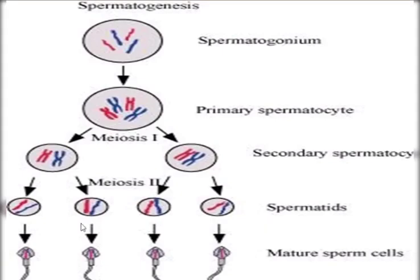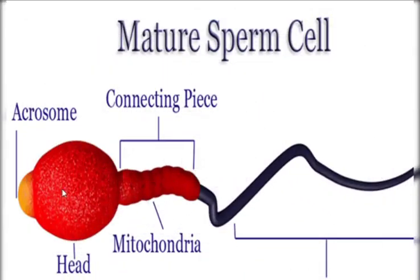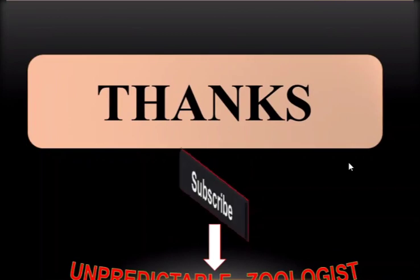Here is the process of spermatogenesis summarized in the diagram. Spermatogonium converts into primary spermatocytes, which convert to secondary spermatocytes after meiosis I. Then meiosis II takes place, converting each secondary spermatocyte into spermatids. Four haploid spermatozoa form, and then differentiation — called spermiogenesis — takes place to form the mature sperm. A mature sperm contains a head with an acrosome, a connecting piece composed of mitochondria, and a tail like a flagellum. Thank you so much — this was all about spermatogenesis. If you liked the video, please subscribe, and in the next video tutorial I will talk about oogenesis.